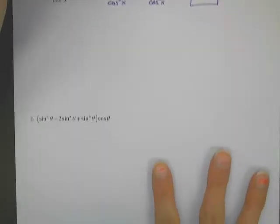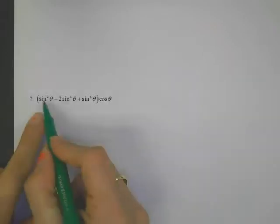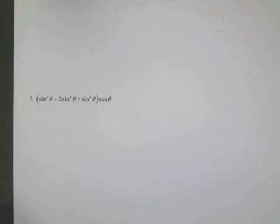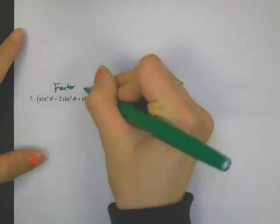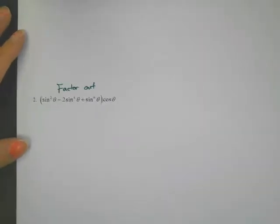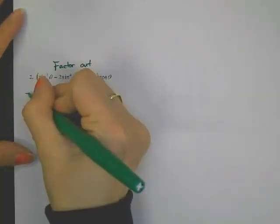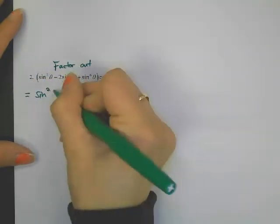How about some hints for number two? This one is a little unusual. I've never seen one like this before. Sine squared, sine to the fourth, sine to the sixth. There's a lot of sines in there. So I'm thinking we should do some factoring. Let's factor out something. Let's take out as many sines as we can. Let's take out sine squared. Equal sine squared of theta.